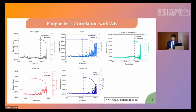Here we report, as a function of the number of load cycles, both the specimen stiffness evaluated from the machine stroke and the accumulated acoustic emission events. There is a clear correlation between the two trends: a drop in stiffness coincides with the onset of acoustic emission accumulation. This is, in my opinion, the most interesting finding from the acoustic emission monitoring of these fatigue tests, because it demonstrates that the main contribution to stiffness loss is related to the onset of fatigue damage, rather than to strain softening phenomena suggested by some works in the literature.